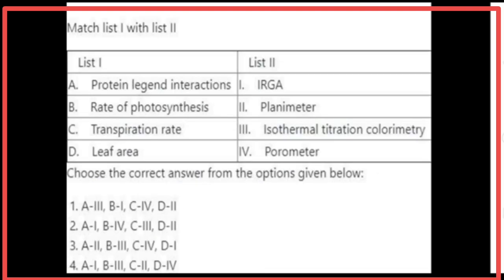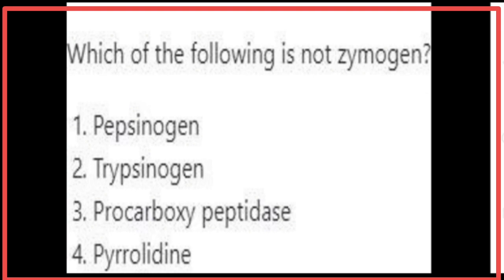Matching List 1 with List 2: Protein–ligand interactions are dealt with by isothermal titration calorimetry. Rate of photosynthesis is measured by IRGA. Transpiration rate is measured by a porometer. Leaf area is measured by a planimeter. The correct option is the first option. Pyrolidine is not a zymogen.